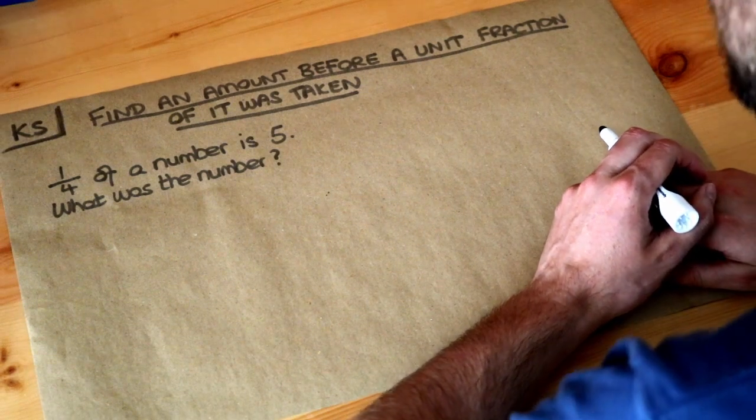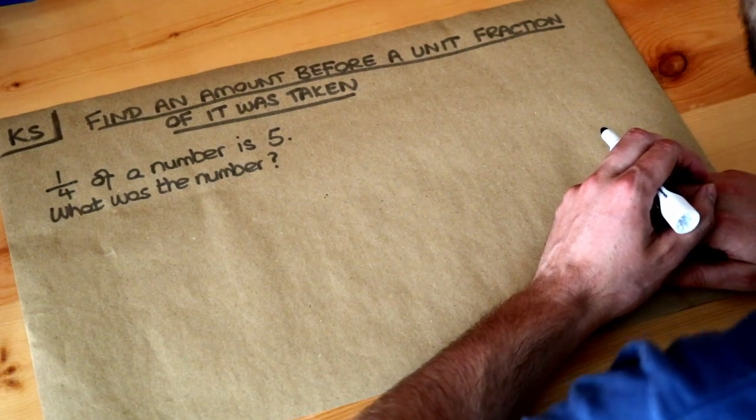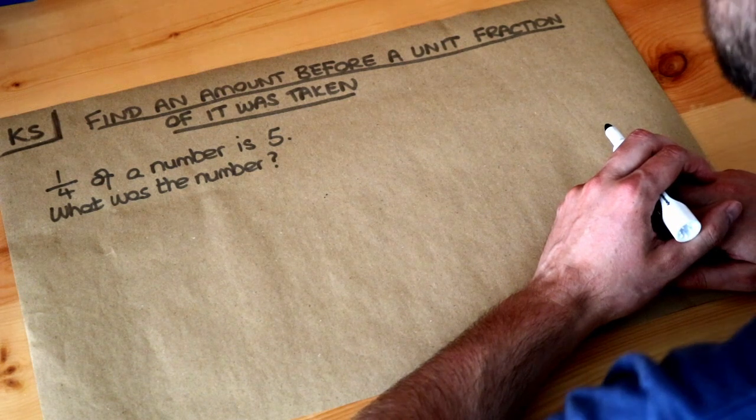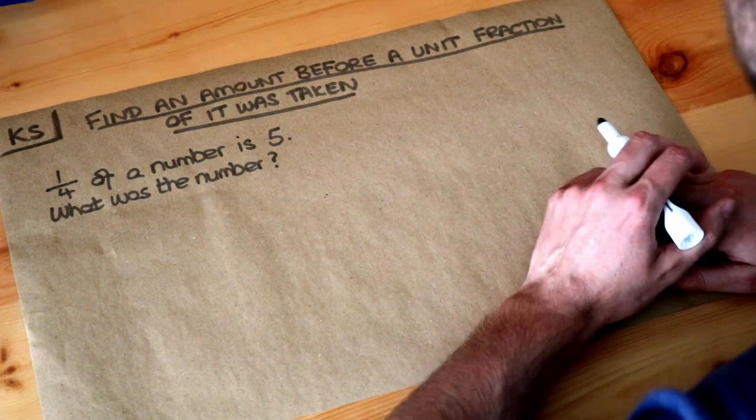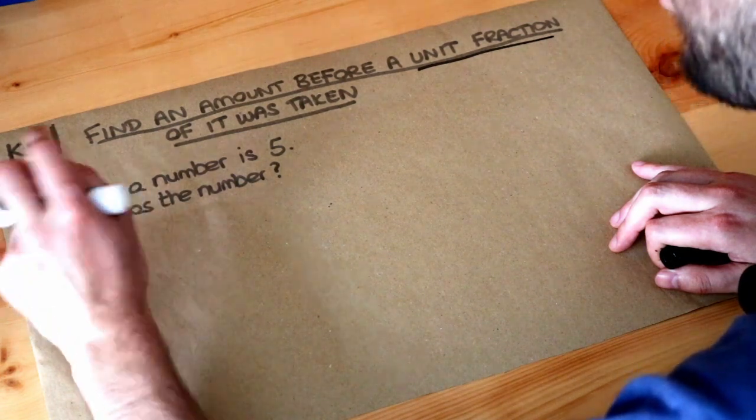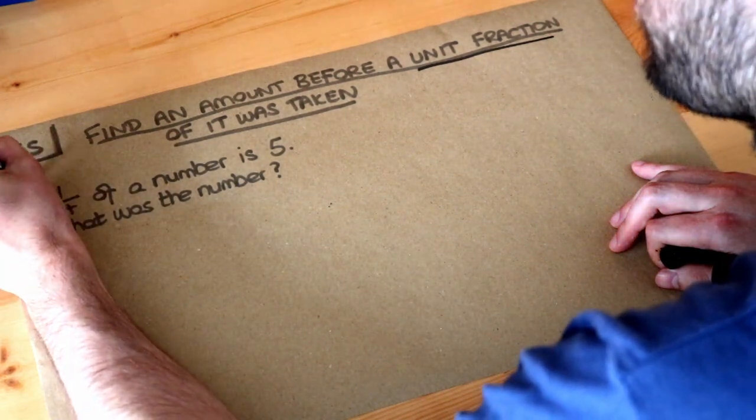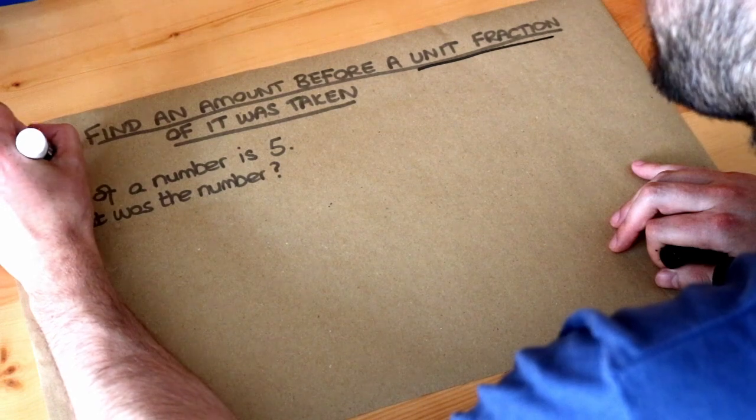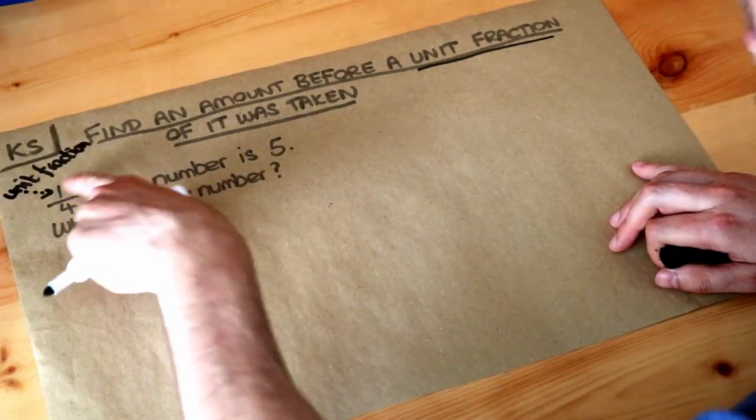Hello and welcome to this Dr. Frost video on finding an amount before a unit fraction of it was taken. What we mean by a unit fraction is just a fraction where the numerator, the top number, is 1.